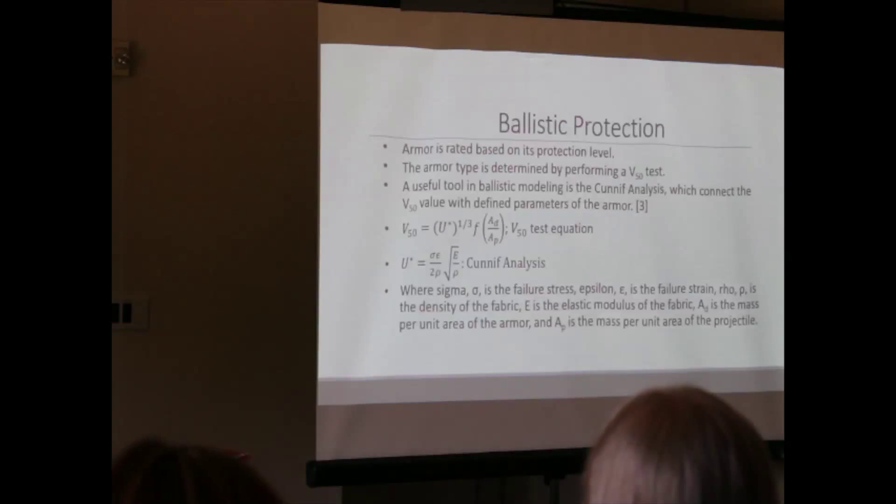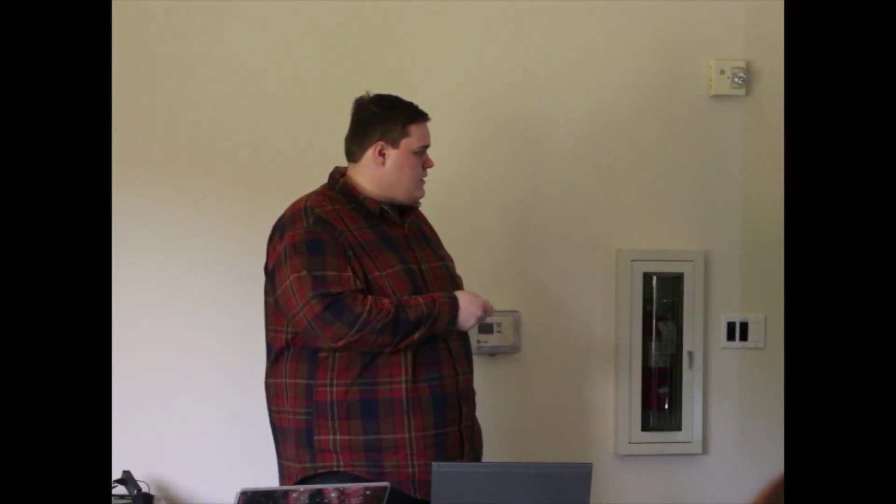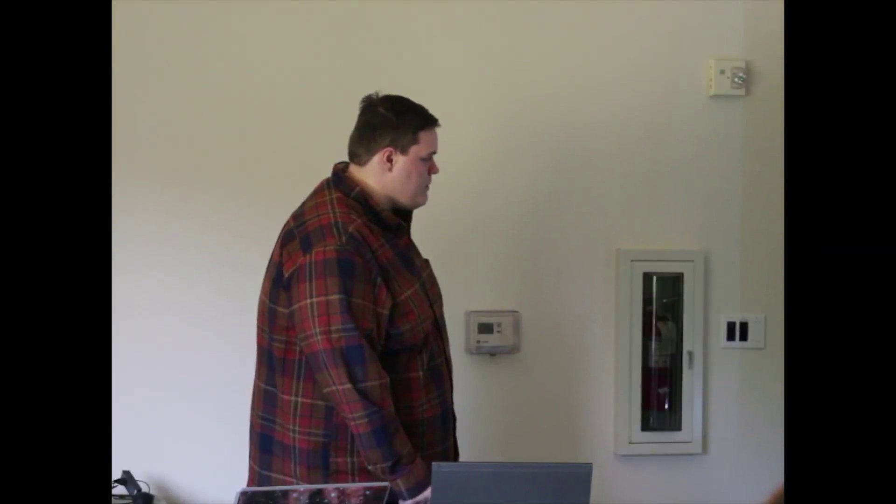So this is just a quick overview of how ballistic protection is basically quantified. Armor is rated based on protection level. That's determined by the government. And they use a V-50 test, which is they take a projectile of known mass and then they fire it at 50% of what the velocity would be if it were coming out of a handgun or some other projectile launcher. And basically, they take a lot of measurements. They use these two equations to determine how effective the armor is at stopping a projectile and how much energy it absorbs and things like that. But unfortunately, we probably couldn't have gotten the funds to do any type of high velocity ballistic test or high mass ballistic test. So instead, we used a BB gun.